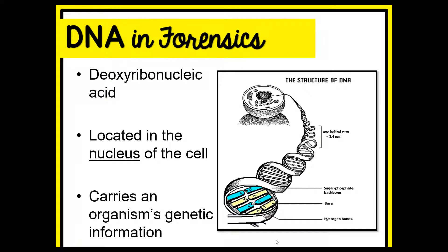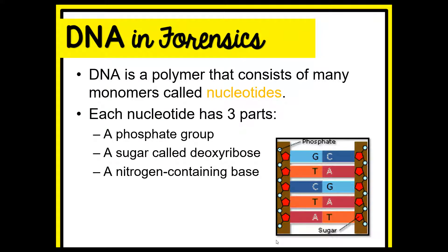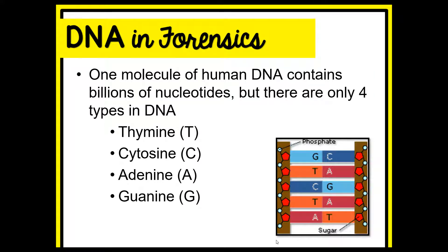Going all the way back to biology: DNA stands for deoxyribonucleic acid. It is located in the nucleus of the cell, and it carries an organism's genetic information. DNA is a polymer made up of many monomers called nucleotides. Each nucleotide has three parts: a phosphate group, a sugar called deoxyribose, and a nitrogen-containing base. One molecule of human DNA contains billions of nucleotides, but there are only four types — thymine, cytosine, adenine, and guanine.